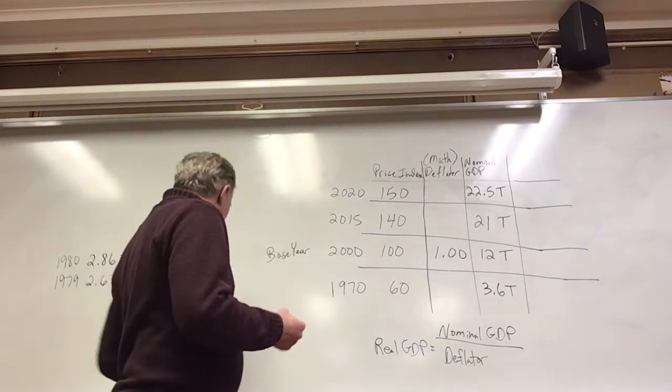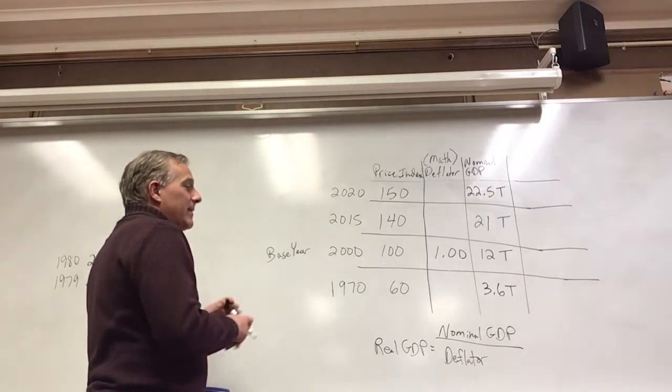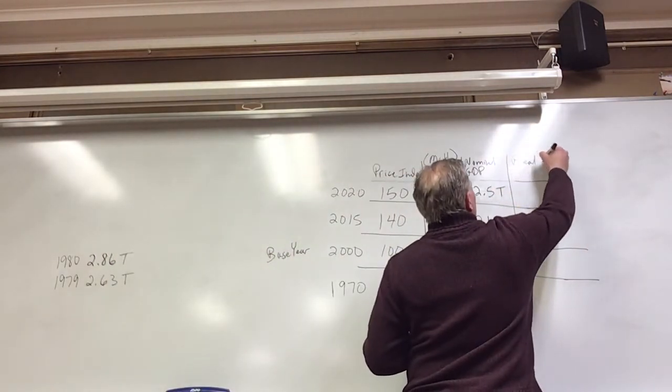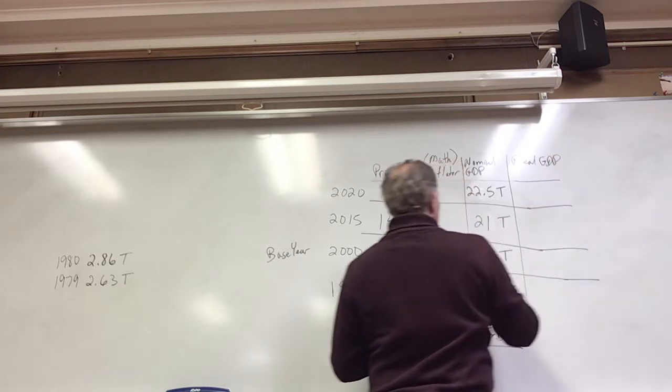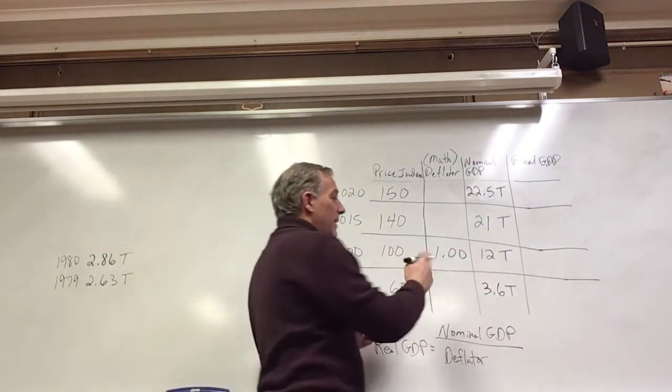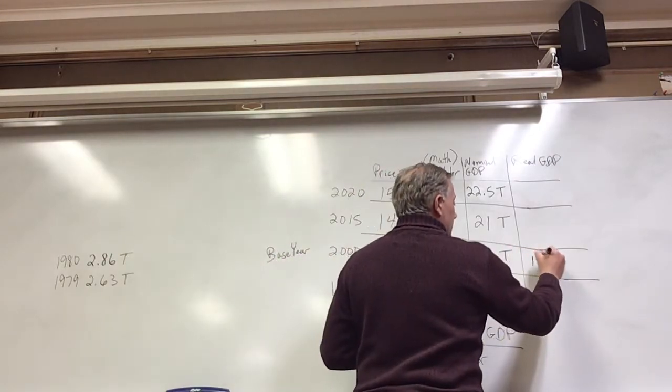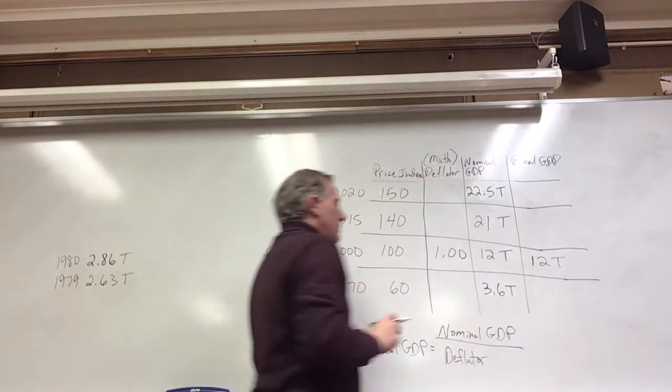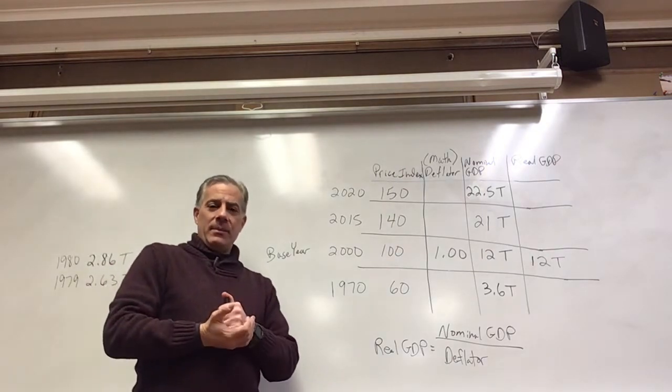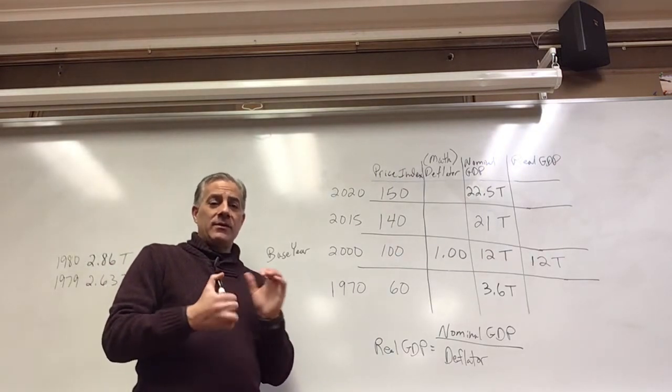So if we did the base year real GDP, we would get the nominal GDP, which are going to be 12 trillion here, divided by 1, which is going to be 12 trillion. So the base year, your nominal GDP and real GDP are always going to be the same, just for the base year.